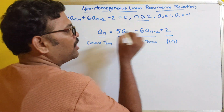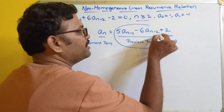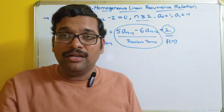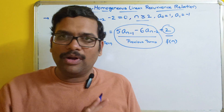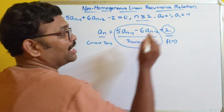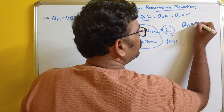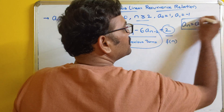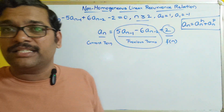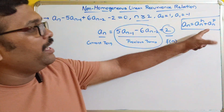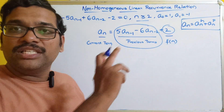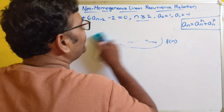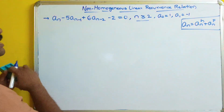The current term doesn't depend only on previous terms, but also on some function. This function can be either a constant, multiples of n, or powers of n. So the general solution is a_n = a_n_h + a_n_p, where a_n_h is the general solution of the homogeneous relation and a_n_p is the particular solution related to the function. You can divide this equation into two parts.